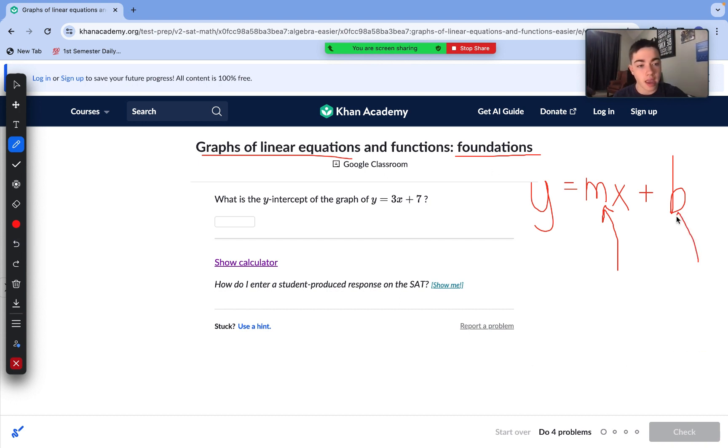And then we have our b. b is our y-intercept. That is where we cross the y-axis. So, if this is a coordinate grid, and then that is a linear equation, its y-intercept is where it crosses or intersects with our y-axis. So, that is the value. b is our value for y-intercept. m is our value for slope.